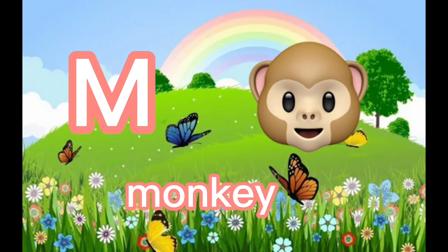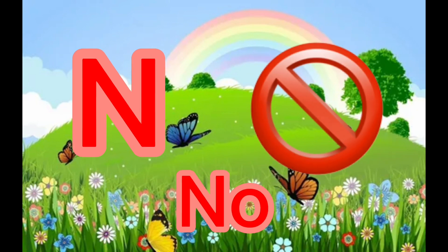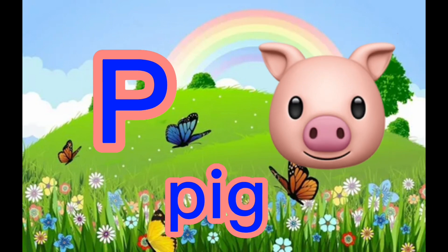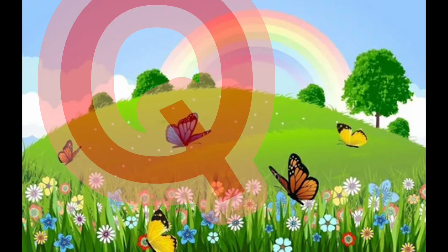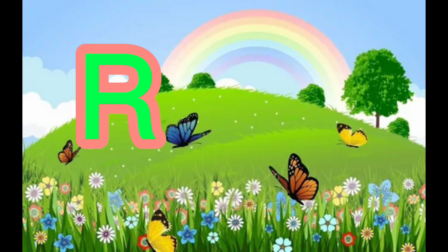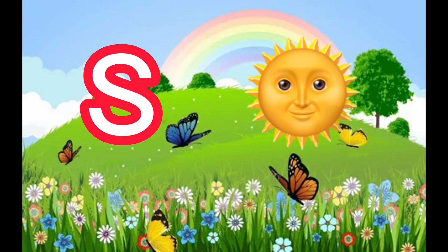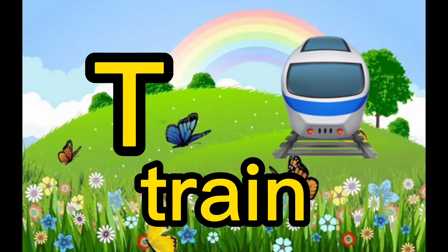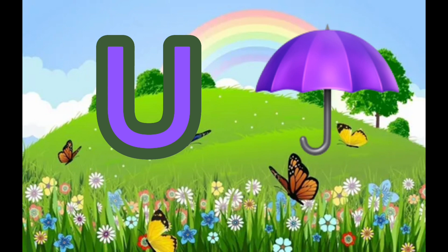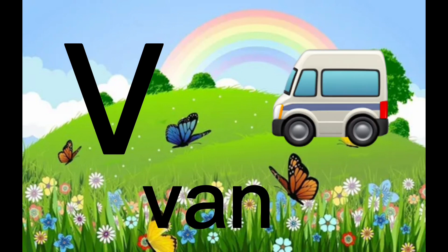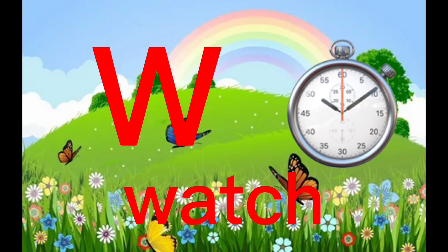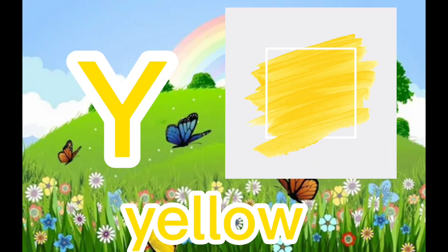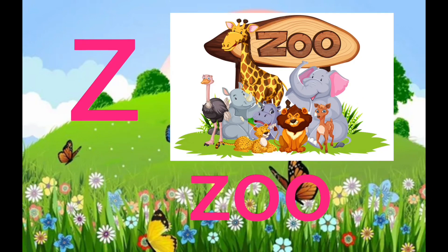M is for Monkey, M-M-Monkey. U is for Umbrella, U-U-Umbrella. V is for Van, V-V-Van. W is for Watch, W-W-Watch. X is for Box, X-X-Box. Y is for Yellow, Y-Y-Yellow. Z is for Zoo, Z-Z-Zoo.